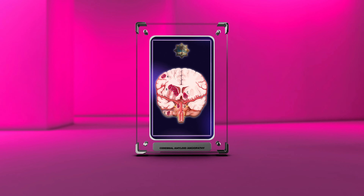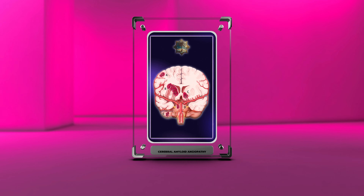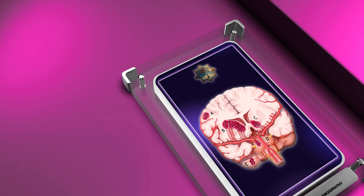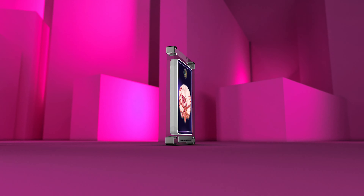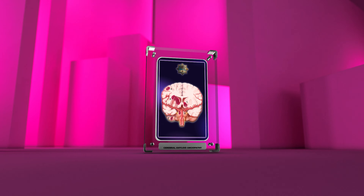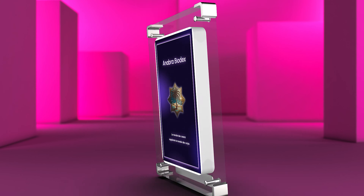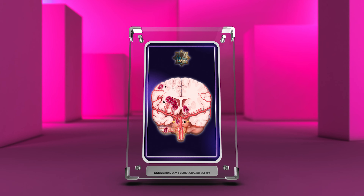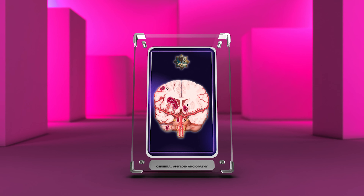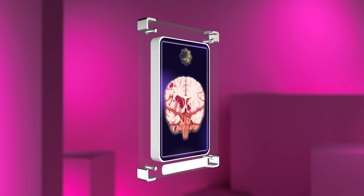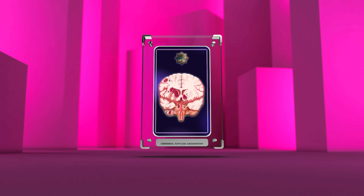Cerebral amyloid angiopathy, CAA, is the buildup of amyloid beta protein in brain blood vessels, causing neurological problems. This video explores CAA's complex causes, diagnosis, treatment, clearance mechanisms, imaging techniques, inflammation, and clinical significance.